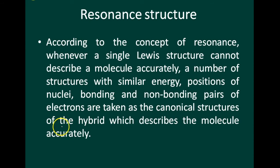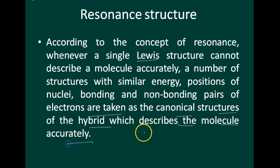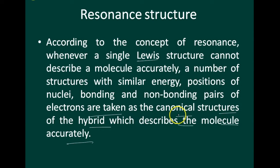The next concept is resonance structure. According to the concept of resonance, whenever a Lewis structure cannot describe a molecule accurately, a number of structures with similar energy, positions of nuclei, bonding and non-bonding pairs of electrons are taken as the canonical structures of the hybrid which describes the molecule accurately.